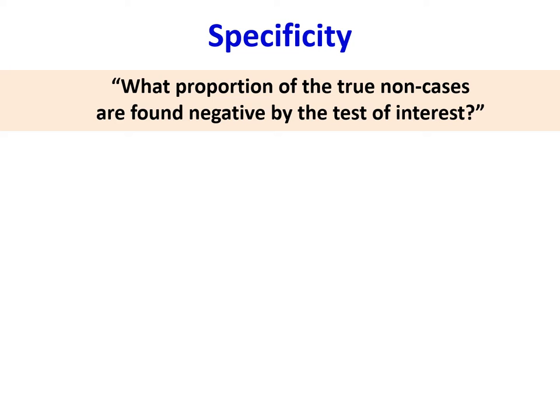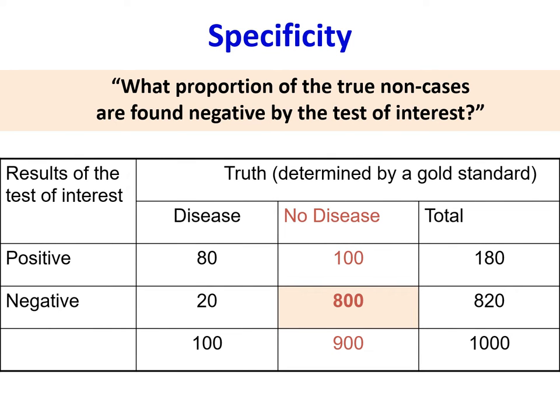Specificity: what proportion of the true non-cases are found negative by the test of interest? Now we look at the second column — no disease determined by the gold standard. There were 900 truly negative people (the true non-cases). Our test of interest identified 800 of them as negatives. So the specificity is 800 divided by 900.